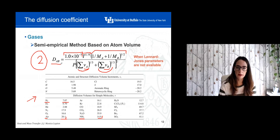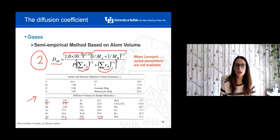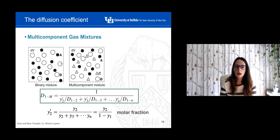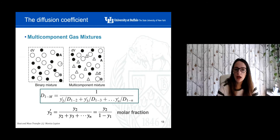These two equations are equivalent, so you should get similar values when you apply them. Both are related to a binary system with two components A and B. What happens if we have more than two components — a multi-component mixture?